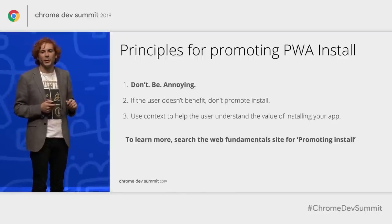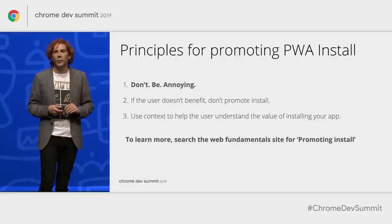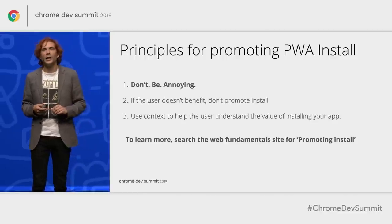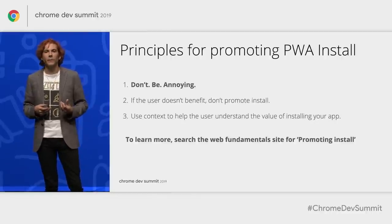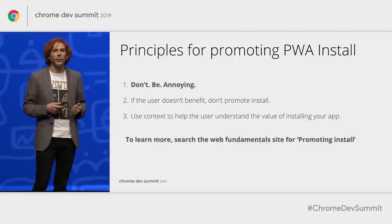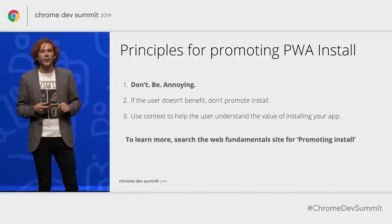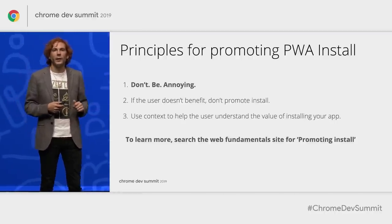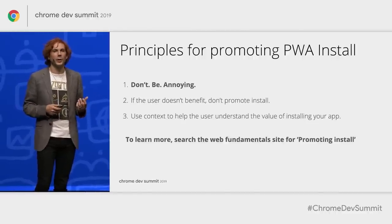Let's recap on the principles. Don't be annoying — your users came to your site to get something done, and if you interrupt that flow they're just going to leave. Information architecture is your friend for figuring out what belongs where, including for promoting install. Second, if the user doesn't benefit, you shouldn't be promoting it. And finally, do use the context — where is the user in their journey — to help the user understand what they're actually going to get out of installing your app.